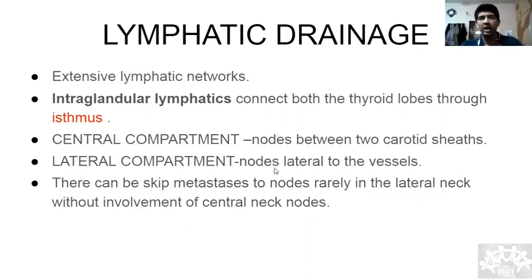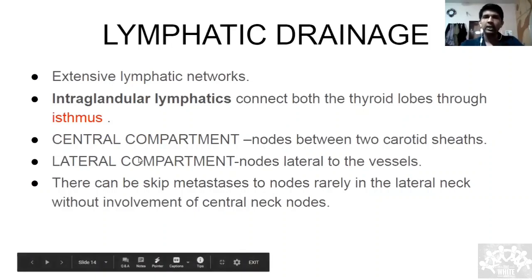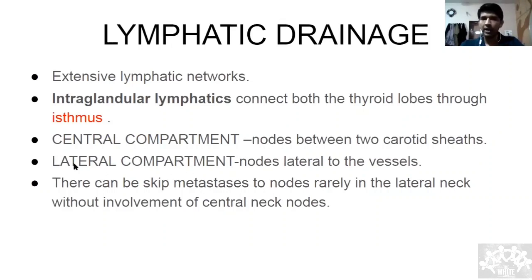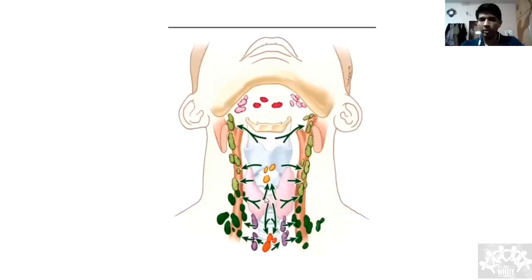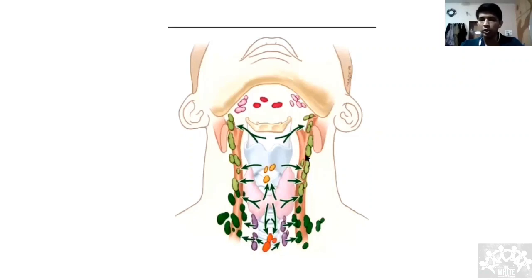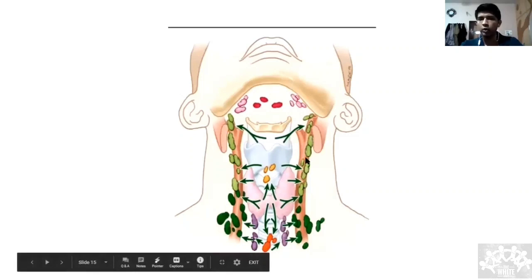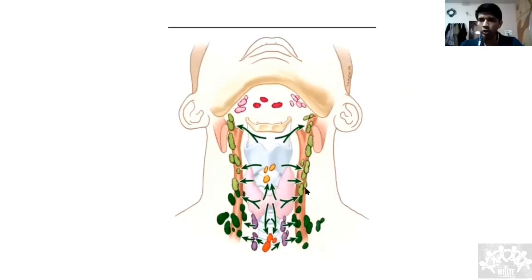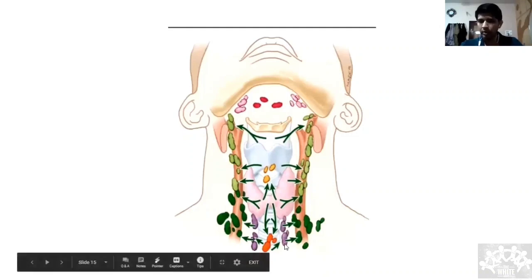Very rarely, there can be skip metastasis to the lateral compartment without going through the central compartment first. Normally from the thyroid it goes to the central compartment (Level 6), then to Level 2, Level 3, Level 4. Most commonly involved are Levels 2 and 3. Very rarely it will skip Level 6 and go directly to other cervical lymph nodes.